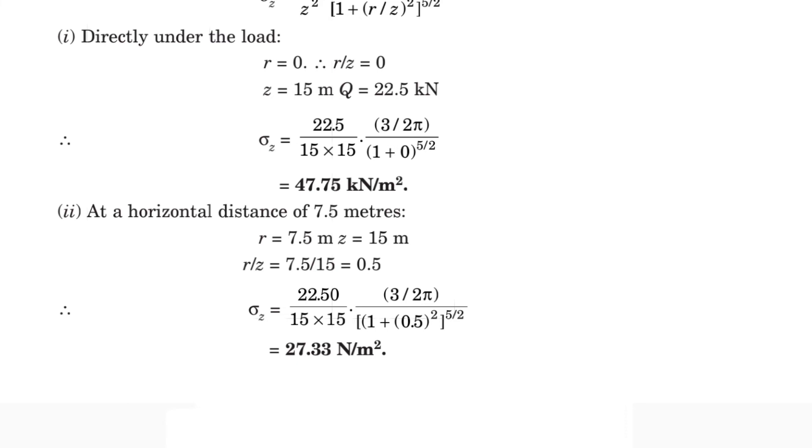Sigma z equals 22.5 divided by 15 times 15, times 3 by 2 pi, divided by [1 plus 0.5 squared] to the power 5 by 2. Solving this, we get the value of 27.33 kN per meter squared.